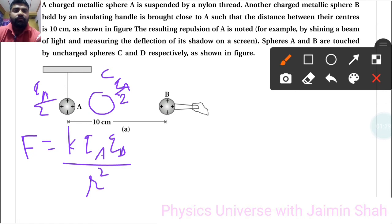So that is QA by 2, QA by 2 similar charges. Here also early charges if it is QB then QB by 2, QB by 2.